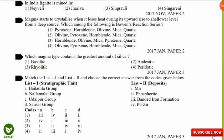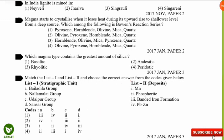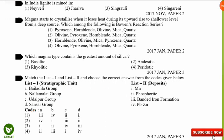The next question is a match-the-following on stratigraphic units and deposit types. Bailadila Group is known for banded iron formation; Nallamalai Group for lead and zinc deposits; Udaipur Group for phosphorite deposits; and Sausar Group for manganese deposits. Code 1 is the correct option. Note all these associations — they are very important.